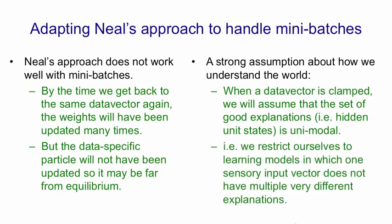This is a restriction on the kinds of models we're willing to learn. We're going to use a learning algorithm that's incapable of learning models in which a data vector has many very different interpretations. Provided we're willing to make this assumption, we can use a very efficient method for approaching thermal equilibrium — or an approximation to thermal equilibrium — with the data. It's called a mean field approximation.